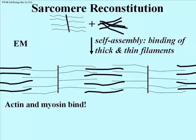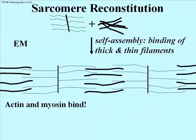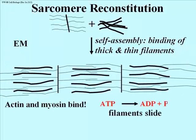So we've demonstrated that actin and myosin do bind — that was one of our predictions, and it turns out to be true. Now look what happens if you add ATP: it is hydrolyzed and the sarcomeres shorten. You can actually do this with a preparation of self-assembled sarcomeres and then look at the results in the electron microscope and see the shortened sarcomere.